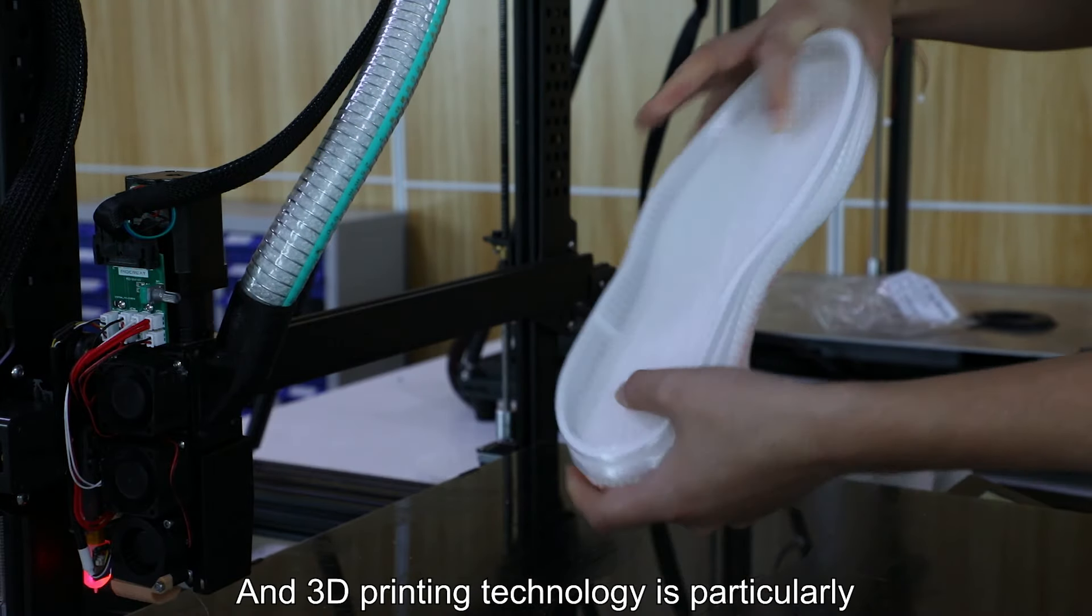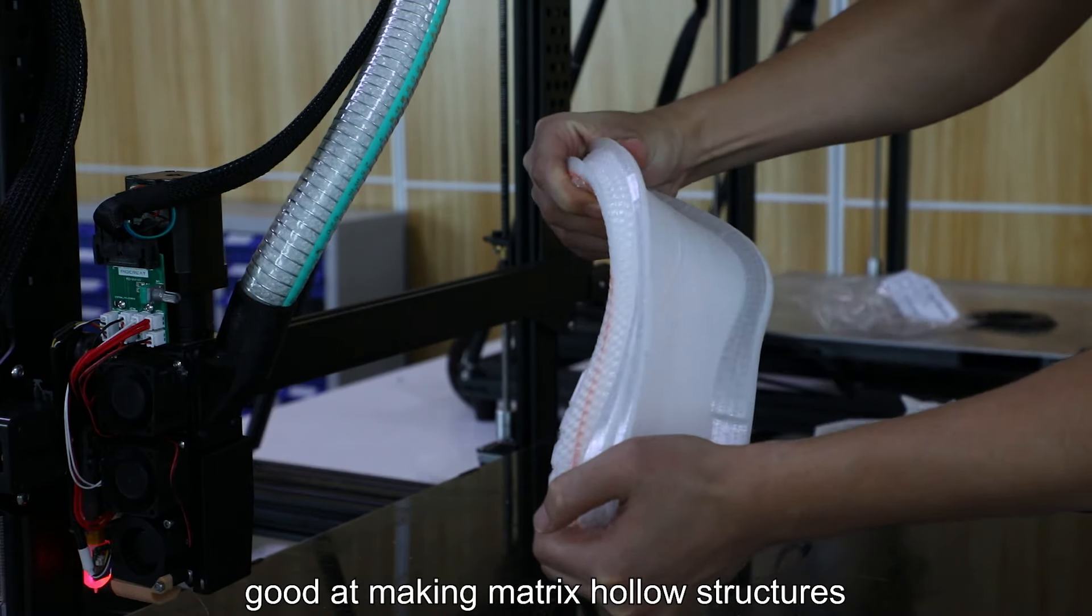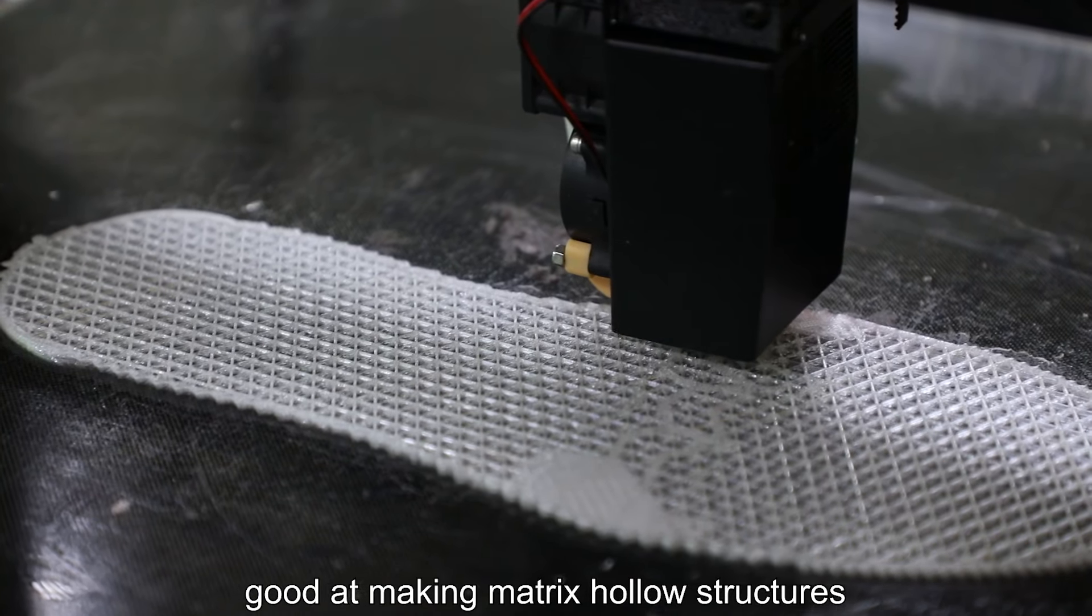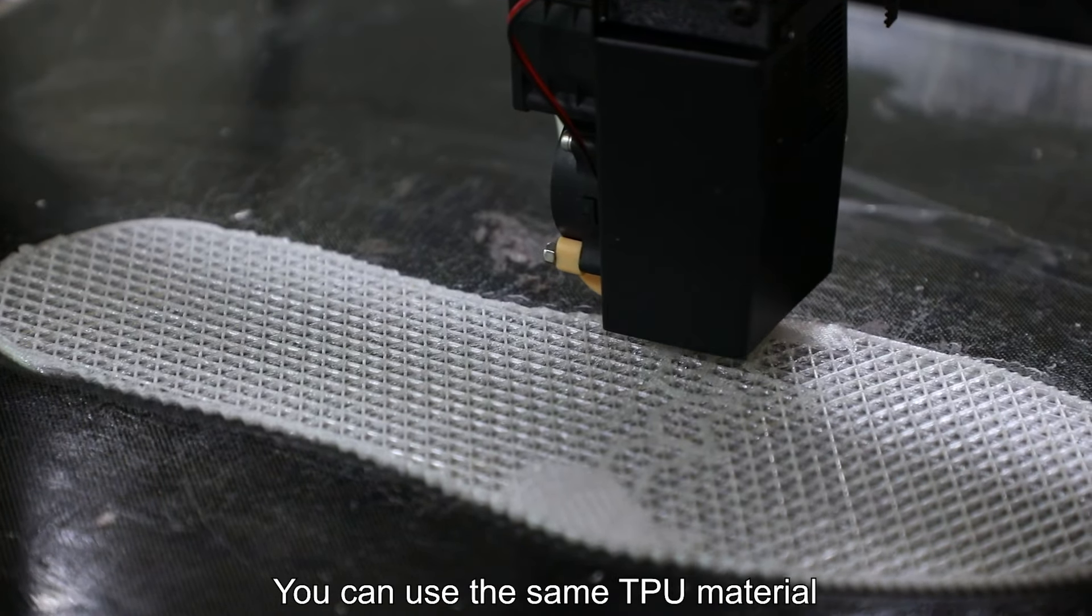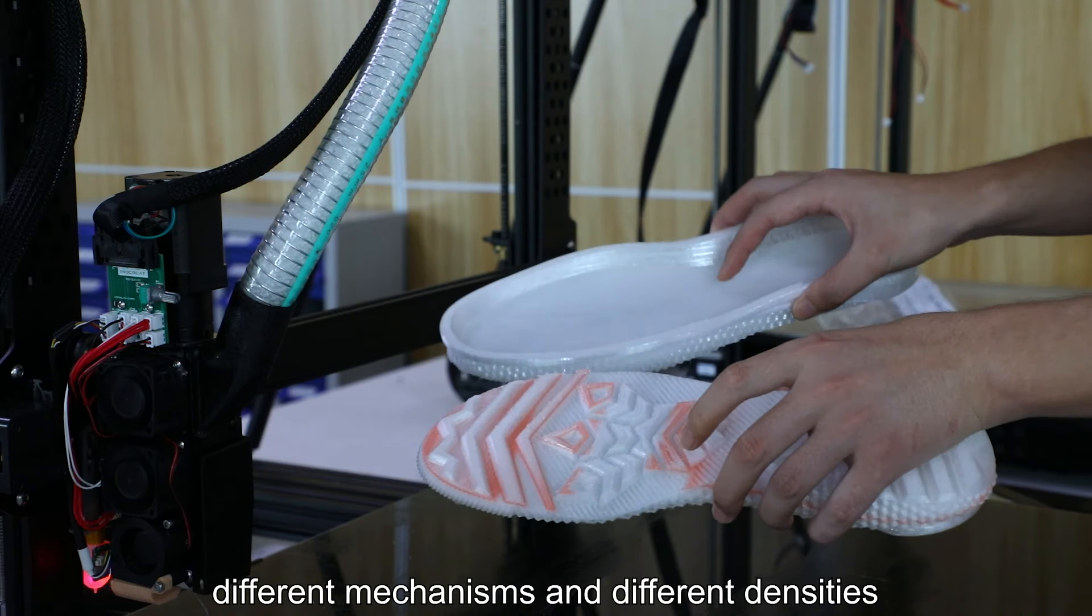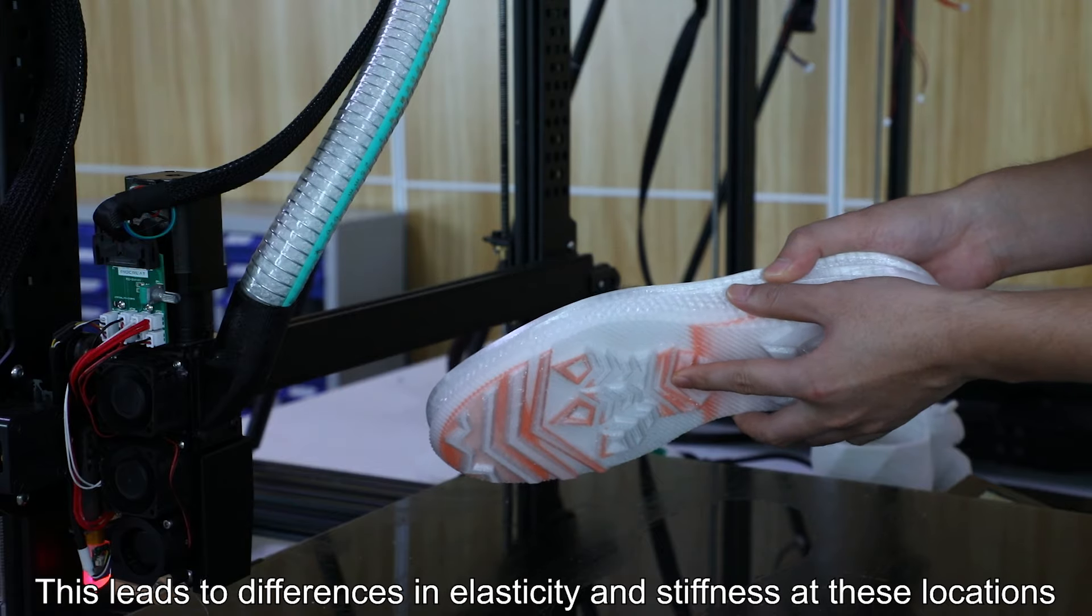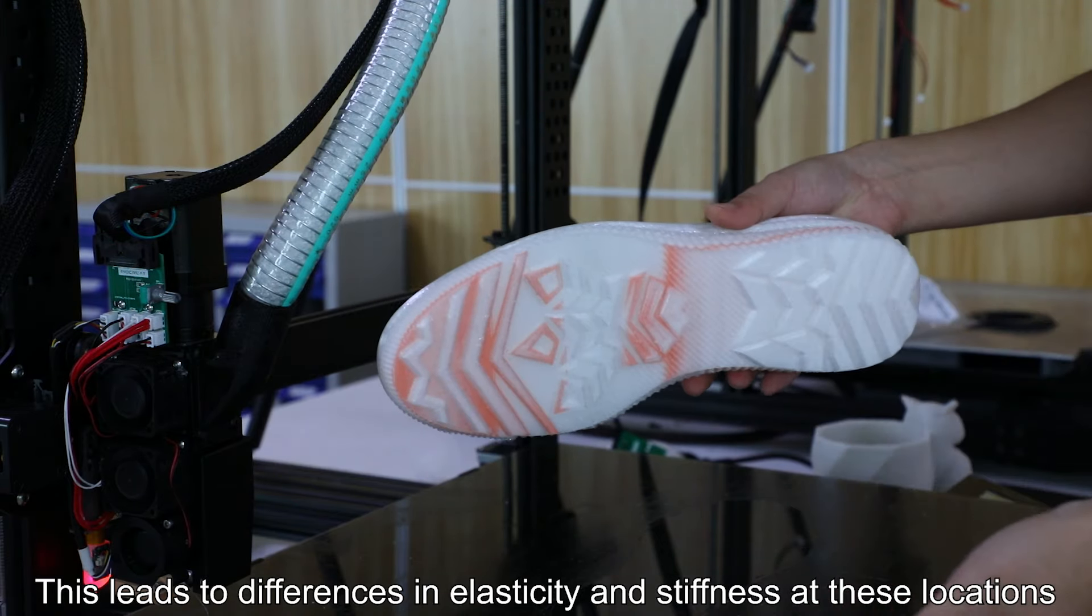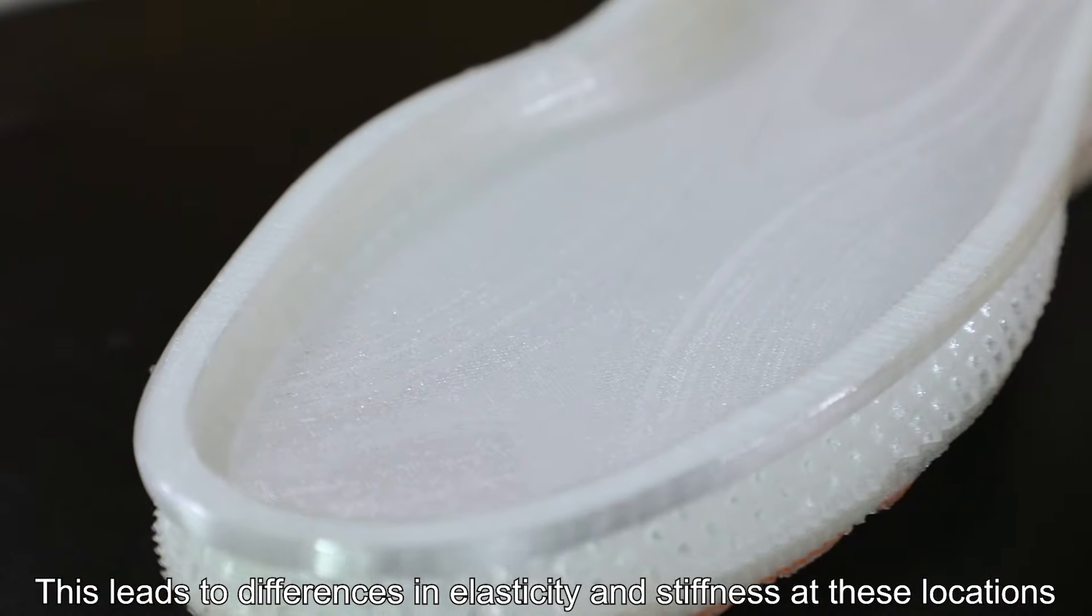3D printing technology is particularly good at making matrix hollow structures. You can use the same TPU material to make soles with different positions, mechanisms, and densities. This leads to differences in elasticity and stiffness at these locations.